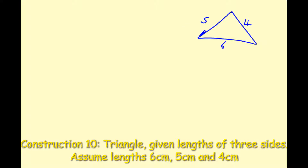First thing we're going to do is draw a ray on our page to create the baseline. A ray is a line which starts at a point and goes to infinity, so with your pencil and ruler construct your ray. I'm going to label the starting point A, putting a dot there and labelling it A. At the end of the ray I'll put in arrows to denote that it goes to infinity.